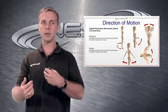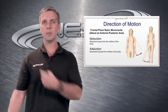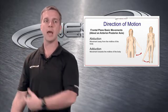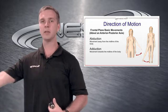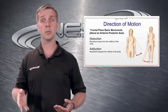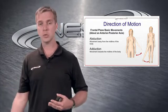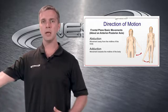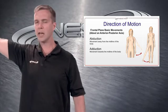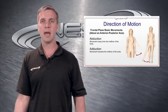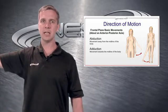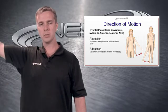Frontal plane movement about the anterior-posterior axis is abduction and adduction. Abduction is away from the midline of the body from anatomical position — like taking the arm away from the midline. Think of abduction as 'taking away.' Adduction — like 'adding' — is bringing it back toward the midline of the body. Away from the midline and towards the midline, respectively.